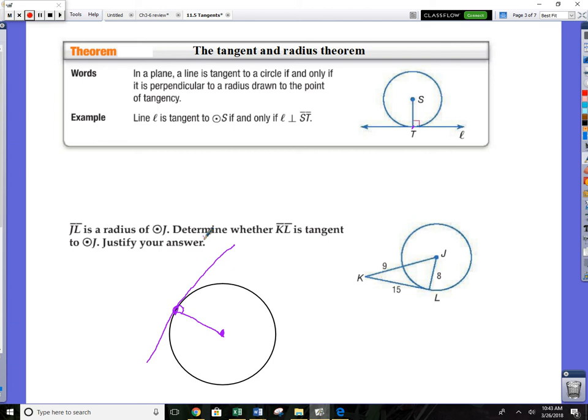They give you a circle J. Determine whether KL is tangent. This is tangent only if that's a 90 degree angle. We're gonna use the Pythagorean theorem to see if this really is indeed a 90 degree, or maybe it's obtuse or maybe it's acute. This would be the hypotenuse, the longest piece in the triangle. The base looks like it's 15, it's 8 tall, this chunk here is 8, so from K to J is actually 9 plus 8.